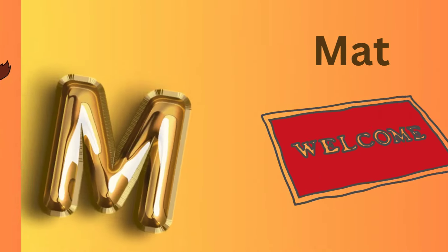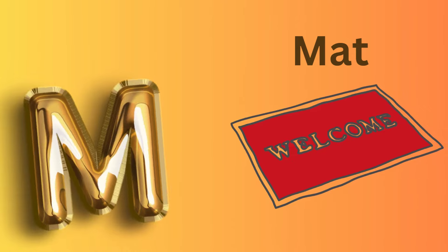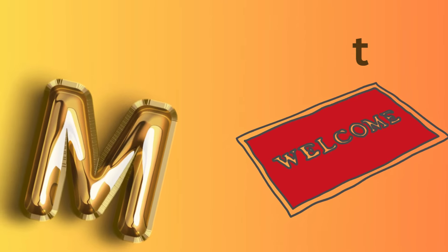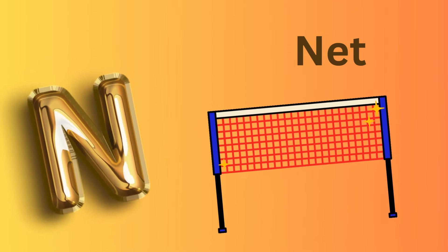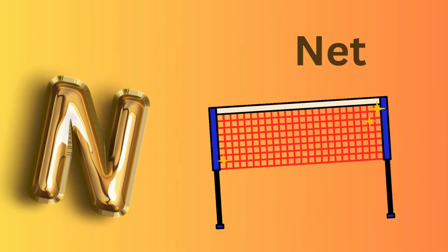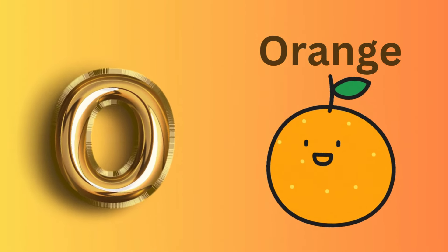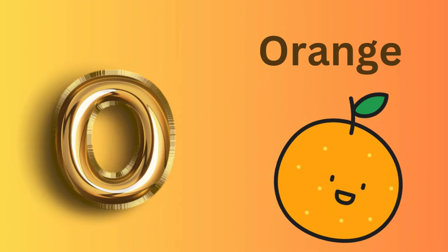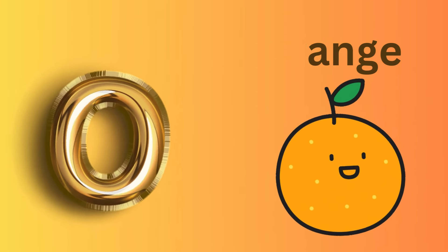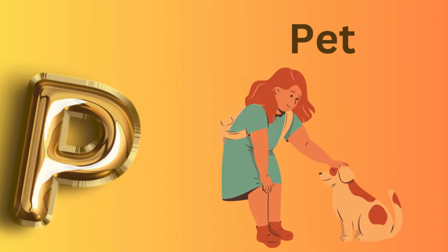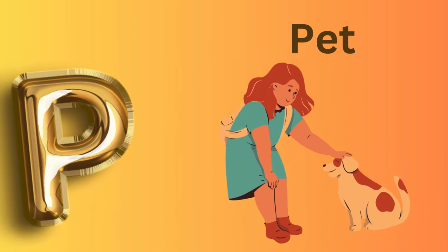M is for Mat. M, M, Mat. N is for Net. N, N, Net. O is for Orange. O, O, Orange. P is for Pet. P, P, Pet.